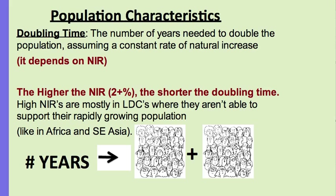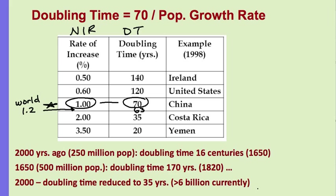Doubling time is the number of years needed to double the population, assuming a constant rate of natural increase. The higher the NIR, the faster the population is growing, so the less time it takes to double — there's an inverse relationship. You should memorize that if there's an NIR of 1%, the doubling time will be 70 years. Given an NIR of 2%, the doubling time will be less than 70; given an NIR less than 1%, the doubling time will be higher because the population is growing slower.